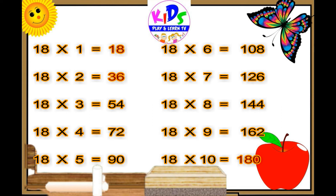Eighteen threes are 54. Eighteen fours are 72. Eighteen fives are 90. Eighteen sixes are 108.